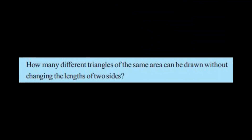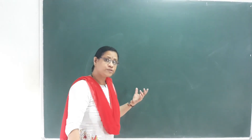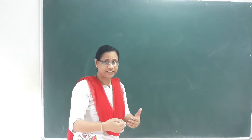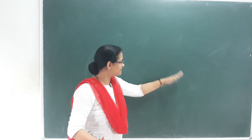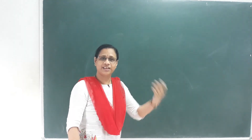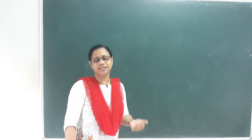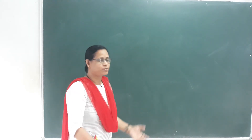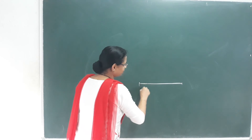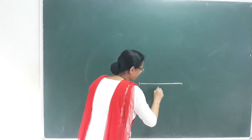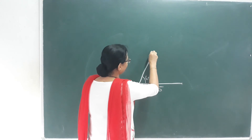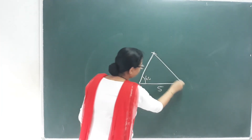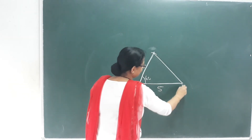How many different triangles of the same area can be drawn without changing the length of 2 sides? If the two sides are equal in the same direction, the triangles are congruent. I'll answer the question: if it is 4 cm and 5 cm, I place these sides. When I put the angle at 60 degrees, I draw the 4 cm and 5 cm sides and form a triangle.